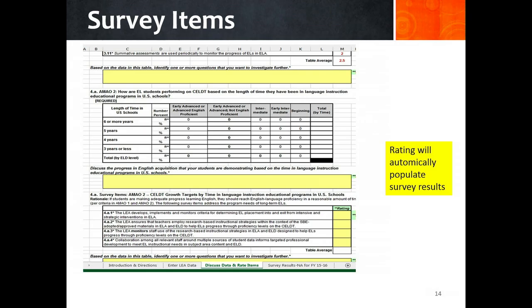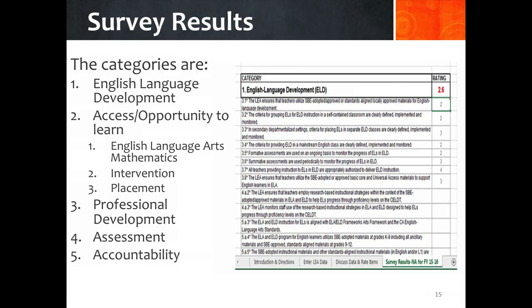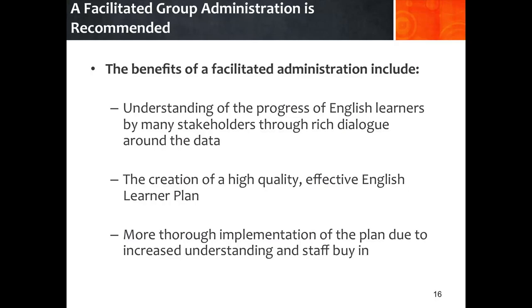In Worksheet 3, the survey questions section is the only other section where numbers can be typed for the purpose of responding to the five ELSA program services categories in the survey section. The responses will automatically populate the survey results section of the ELSA. The responses to the survey items are automatically tabulated for each table and aggregated into a table in a separate worksheet by the five English learner program and services categories. Each category is comprised of a series of questions that together give the local education agency or district an overall rating per category.